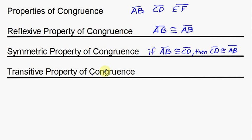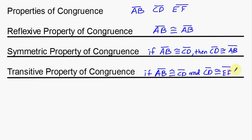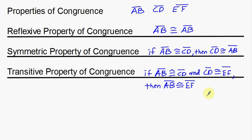Last but not least, the transitive property of congruence. This one's a bit longer and uses all three segments. If segment AB is congruent to segment CD, and segment CD is congruent to segment EF, then segment AB is also congruent to segment EF — making the big jump from the first statement to the last.